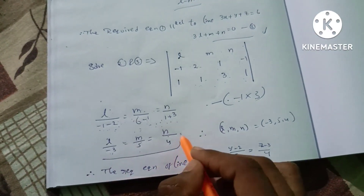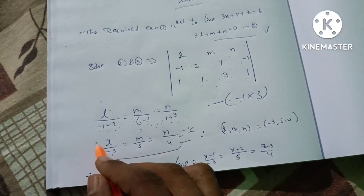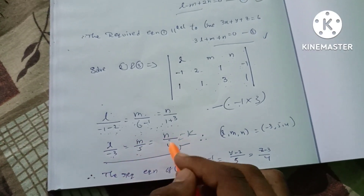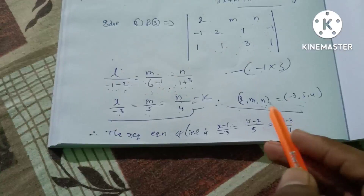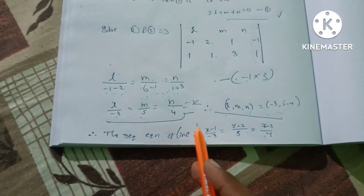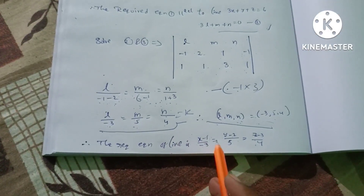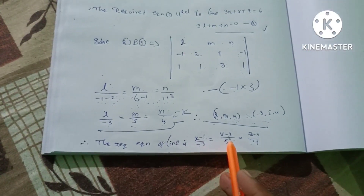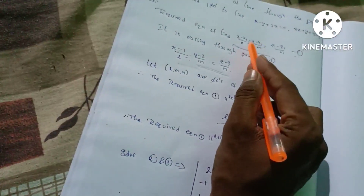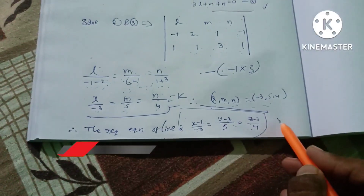Therefore, L = -3, M = 5, N = 4. Substituting these direction cosines into equation 1: (x - 1) / (-3) = (y - 2) / 5 = (z - 3) / 4. This is the required equation of the line through (1, 2, 3) and parallel to the given line.